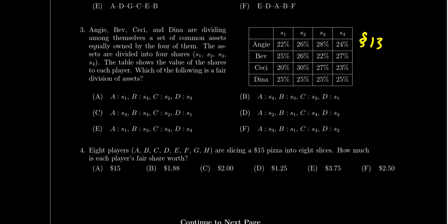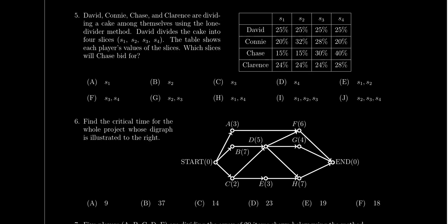Question four is related — it asks how much a fair share is going to be, or how much players value certain things, without requiring you to distribute anything. Questions three and four are both drawn from lesson 13's introduction to fair shares. Be prepared for multiple choice questions based on value systems: how much is a fair share, and how much will players value a given item.